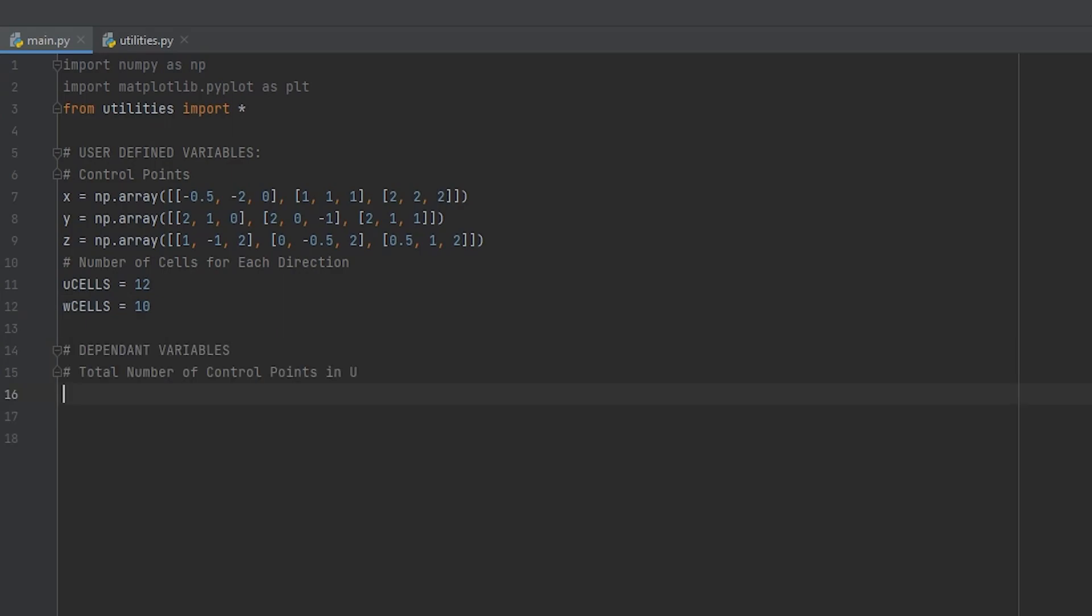Now we can obtain some other values that depend on our control points and number of cells. The number of control points in the direction U will be equal to the number of rows that our control points arrays have. So same number of rows as X, Y, or Z. I will use just X in this case and for W, it will be the number of columns. Then the number of segments is one less than the number of control points. So N is equal to U PTS minus one and M is equal to W PTS minus one.